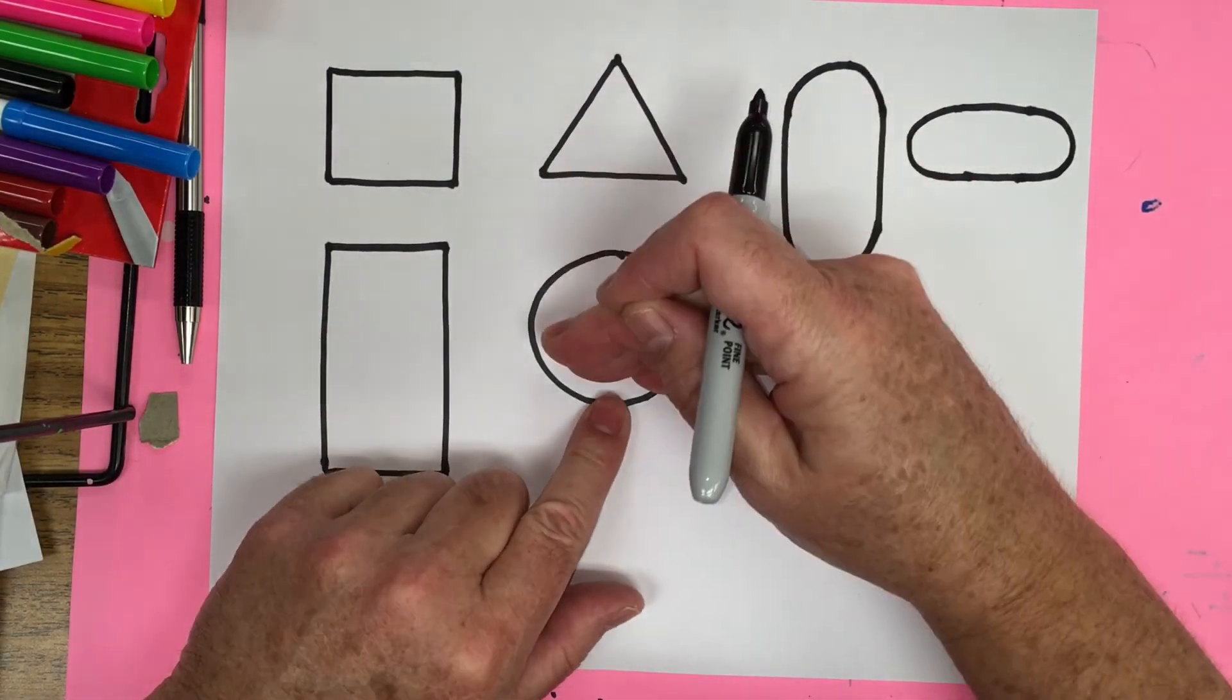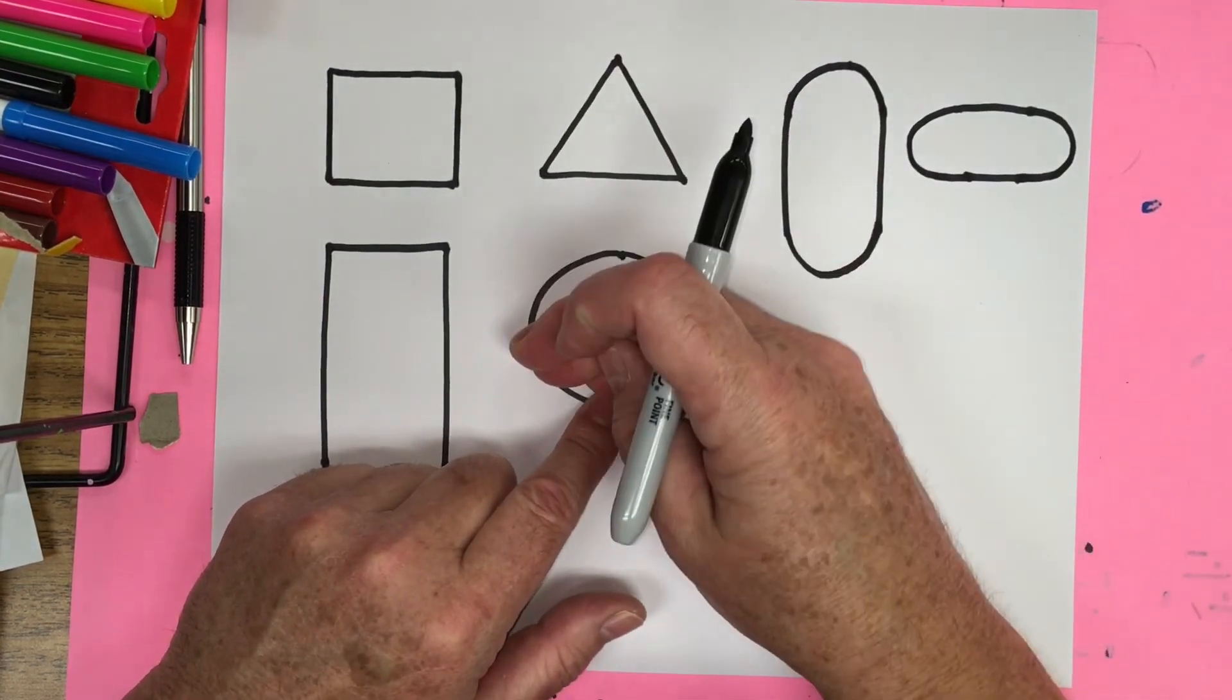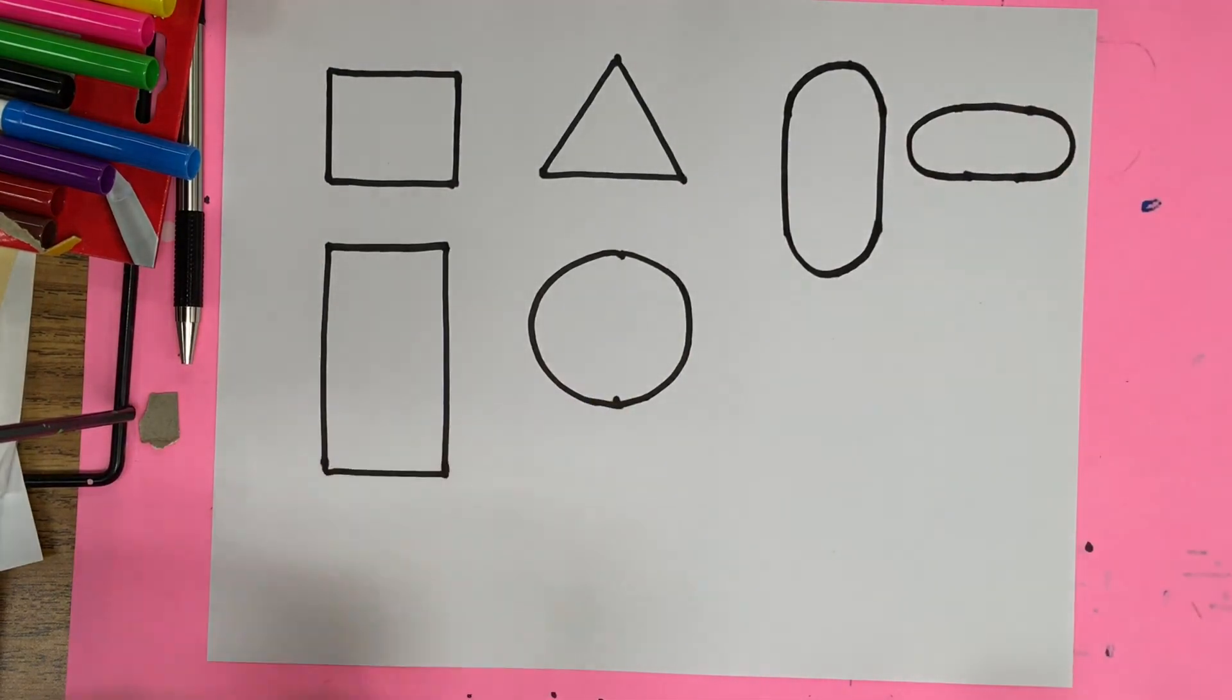It's almost like somebody sat on it and squished it. See how somebody squished that circle? If you push it down, it expands out. So here we have our basic shapes.